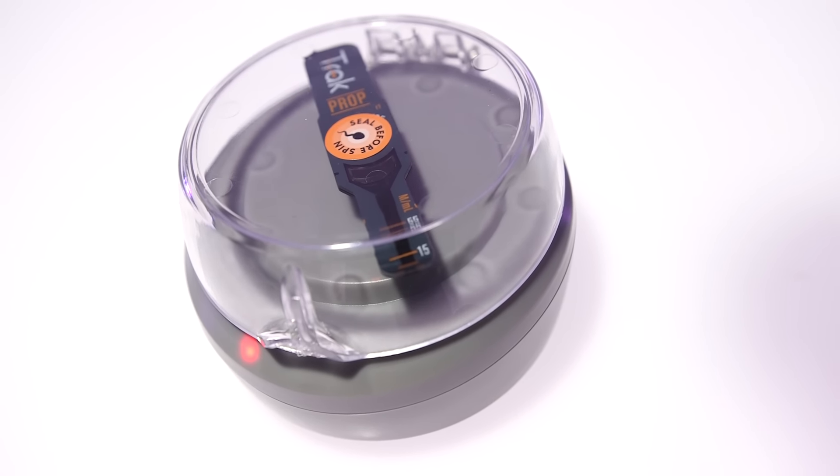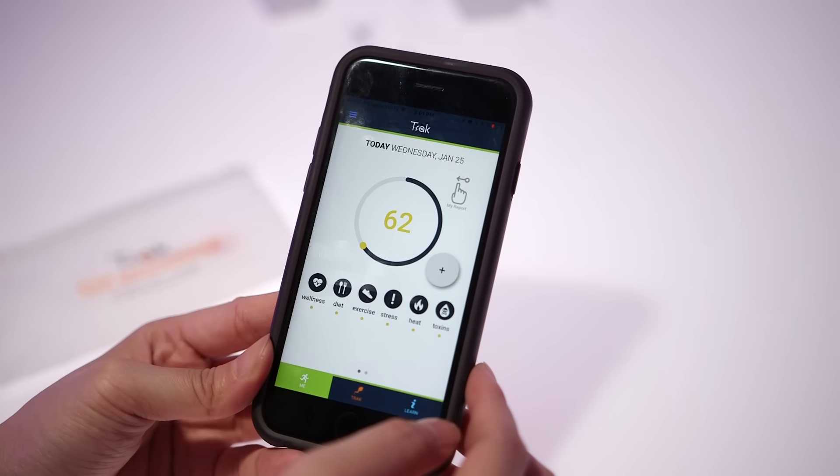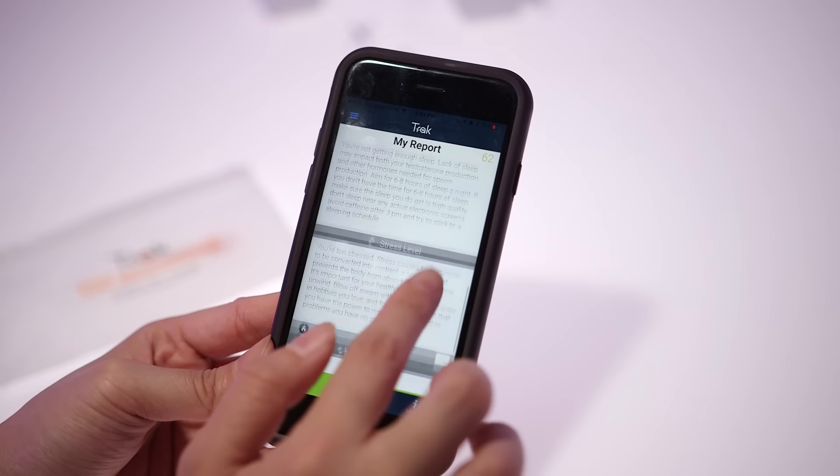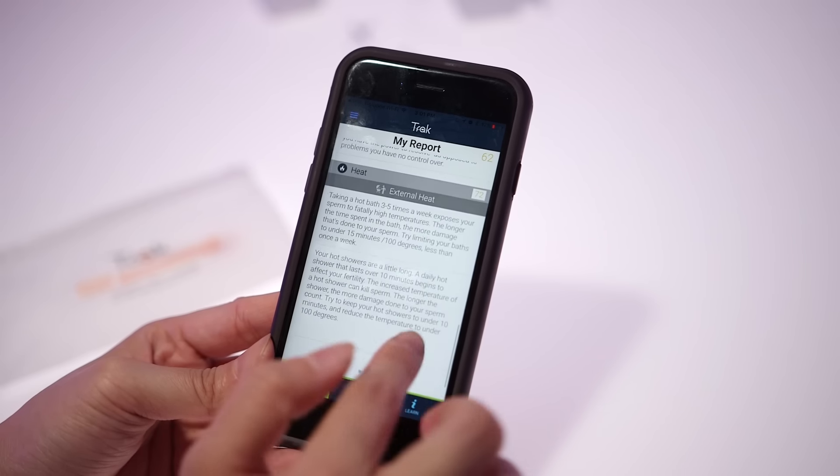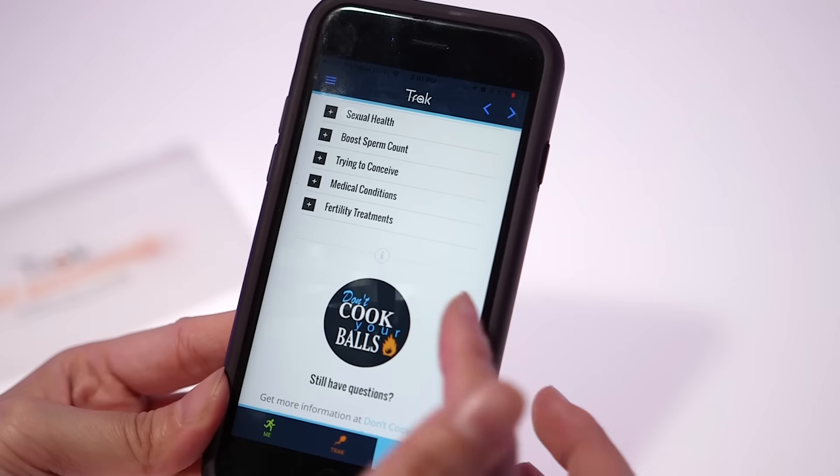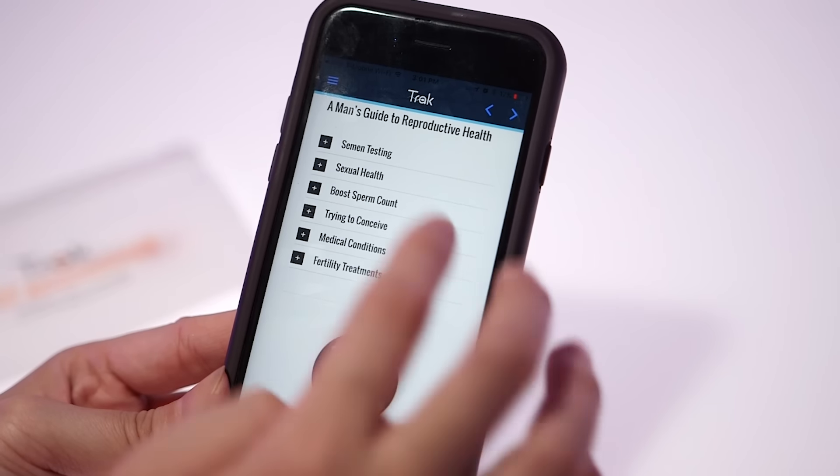One of the other benefits of TRACK is that you can use your sample to get other insights on your health. Monitoring the changes in your sperm can also provide a clearer idea of whether lifestyle changes made a biological impact on your health.